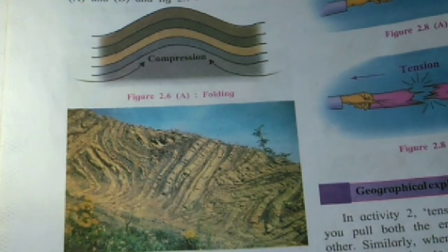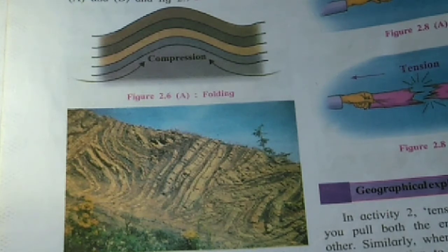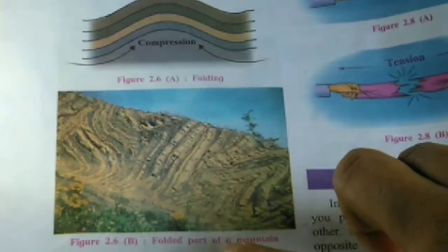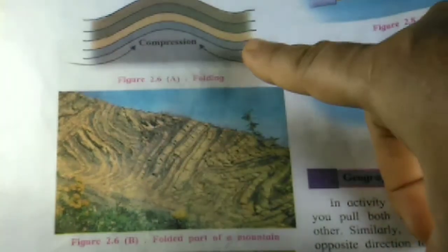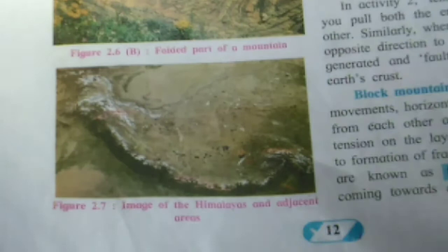Energy is transferred from the interior of the earth through energy waves moving towards each other in the horizontal direction. The layers of soft rocks form folds. If the pressure is very high, large-scale folds are formed and their complexity increases. As a result, the surface of the earth gets uplifted and fold mountains are formed. The Himalayas, the Aravalis, the Rockies, the Andes and the Alps are the major fold mountains of the world. This is Figure 2.6a and Figure 2.6b showing compression and the folded part of a mountain, along with an image of the Himalayas and adjacent areas.